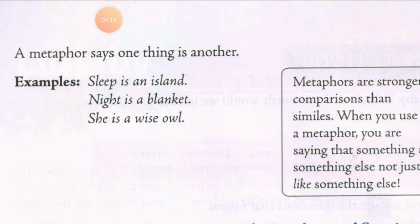Night is a blanket — it is forcing that night is a blanket. In simile there are words like 'like' or 'as,' but here that is not the case. Yahaan ek cheez ko doosri cheez hi maan liya gaya hai. Third example: 'She is a wise owl' — voha ek samajhdaar ullu hai.